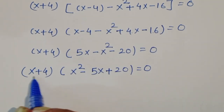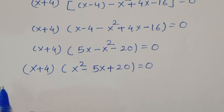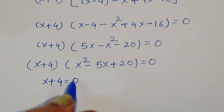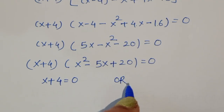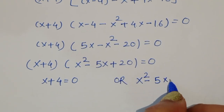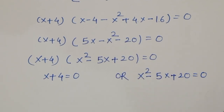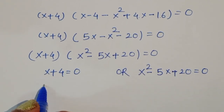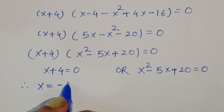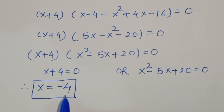This gives us two equations: x plus 4 equals 0, and x squared minus 5x plus 20 equals 0. From the first equation, x plus 4 equals 0, therefore x is equal to minus 4.